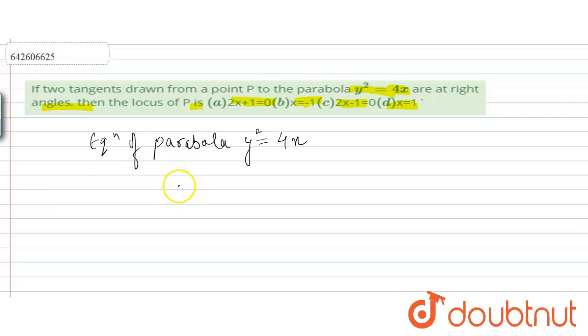The locus of point P from which two perpendicular tangents are drawn to the parabola is the directrix of the parabola. So, standard equation of parabola is,